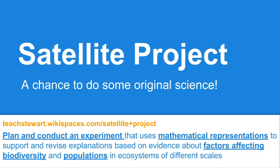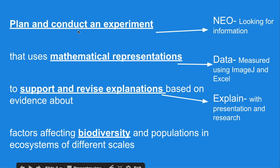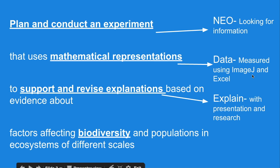The objective for this lesson is big and wordy, so let's break that down. One is to plan and conduct experiments — we're going to use NASA Earth Observation. Next, use mathematical representations: we're going to be analyzing some images using a program called ImageJ and then using that data in Excel. The last step is to support and revise explanations based on evidence, and all of this ties together the idea of biodiversity.